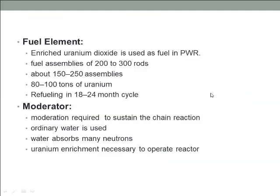Let's start with the fuel element. Like the boiling water reactor, enriched uranium dioxide is used as fuel in the pressurized water reactor. Fuel rods are grouped in fuel assemblies called fuel bundles that are used to build the core of the reactor. A typical pressurized water reactor has fuel assemblies of 200 to 300 rods each, and a large reactor would have about 150 to 250 such assemblies with 80 to 100 tons of uranium in all. Usually, refueling in a pressurized water reactor is performed after an 18 to 24 month cycle.